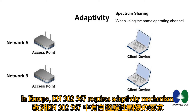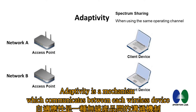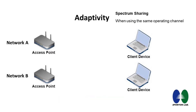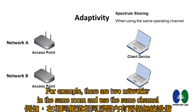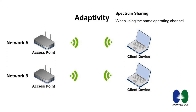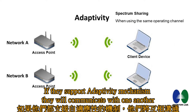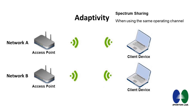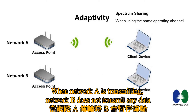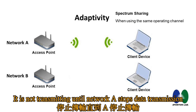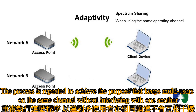In Europe, EN302567 requires an additivity mechanism. Additivity is a mechanism for communication between wireless devices, also called spectrum sharing. For example, if there are two networks in the same room using the same channel and they support additivity, they will communicate with one another. When network A is transmitting, network B does not transmit. It waits until network A stops, then transmits. This process repeats to allow multi-users on the same channel without interfering with one another.